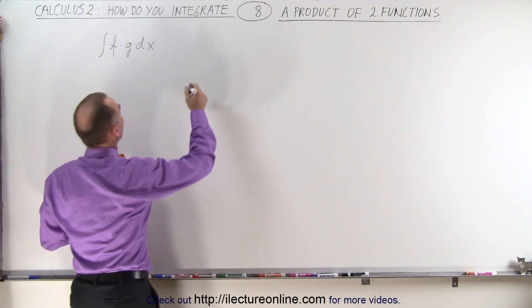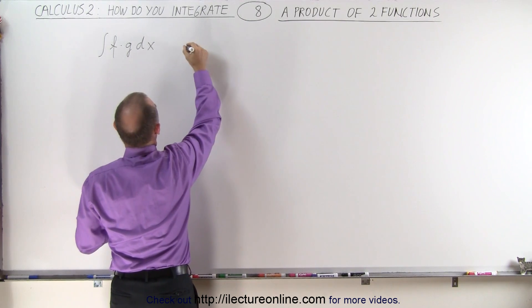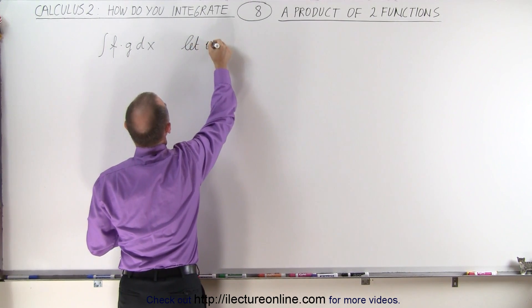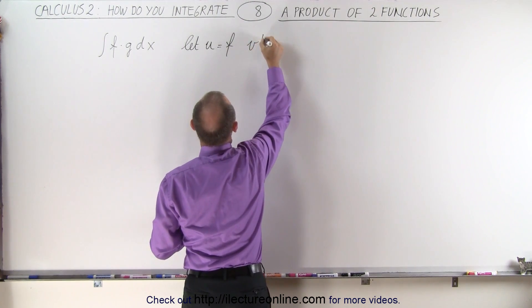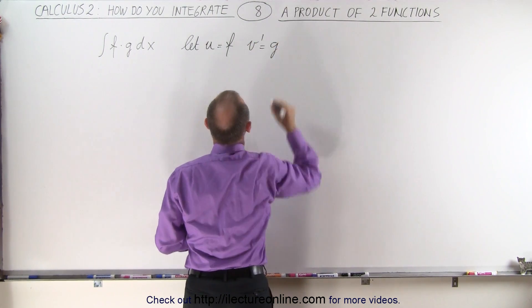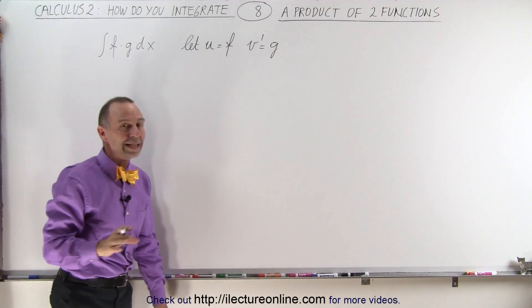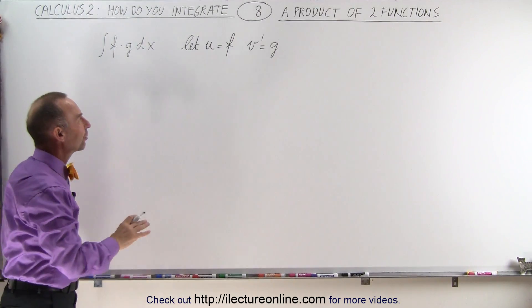Let's rename these functions. Let u equal the function f and let v prime equal the function g, which means we're going to write g as the derivative of the function v.